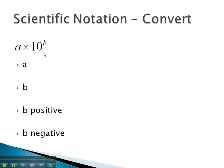Scientific notation is used to express really big or really small numbers in the form a times 10 to the b, where a, the number in front, will always be between 1 and 10. This means the decimal will always come after the first digit.